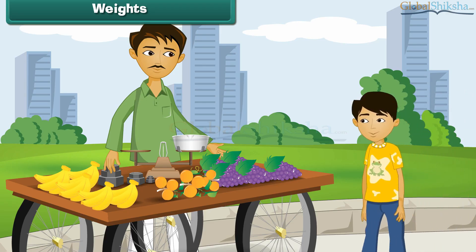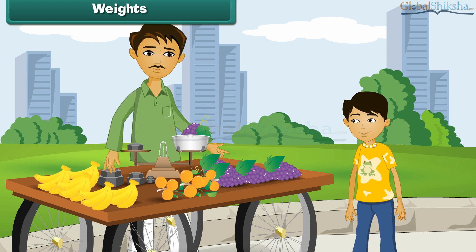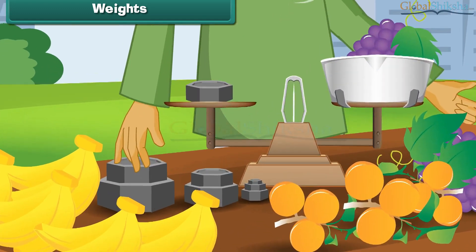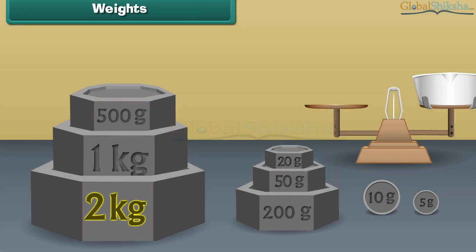When we go to the fruit seller, he uses different types of weights to balance the required amount of objects. Some weights used to measure are: 2 kg, 1 kg, 500 grams, 200 grams, 50 grams, 20 grams, 10 grams, and 5 grams.